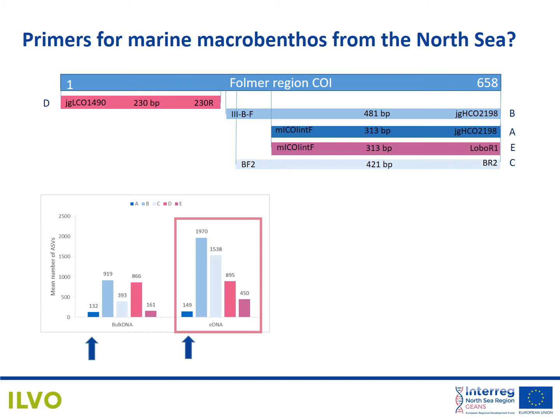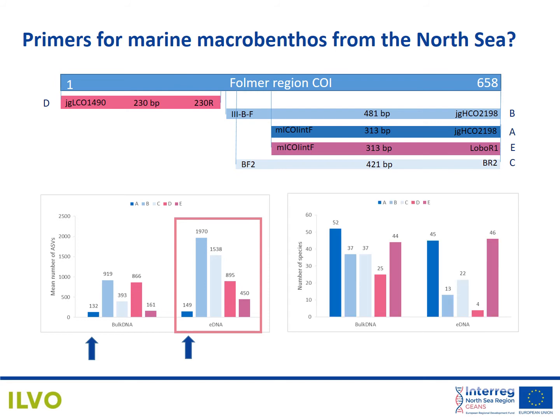We looked at how many species were detected after taxonomic assignment. In this graph we can see that primer set A performed best, with 52 species detected in the bulk DNA and 45 species detected in the eDNA from the ethanol preservative. Primer set A is the Liray primer set, which has been developed for marine annelids. In what follows I will show you the results for this primer set.